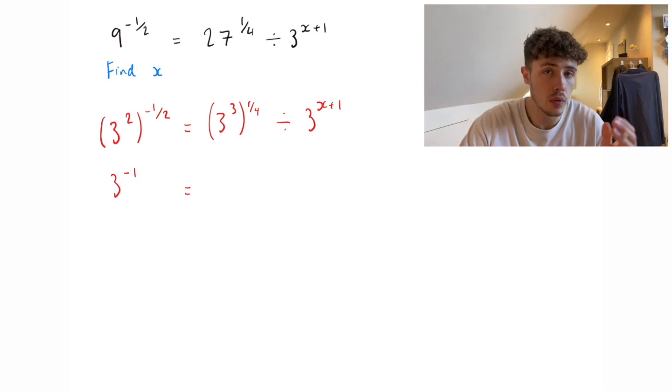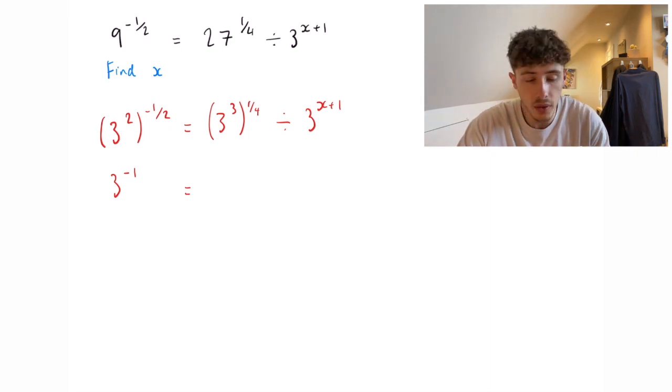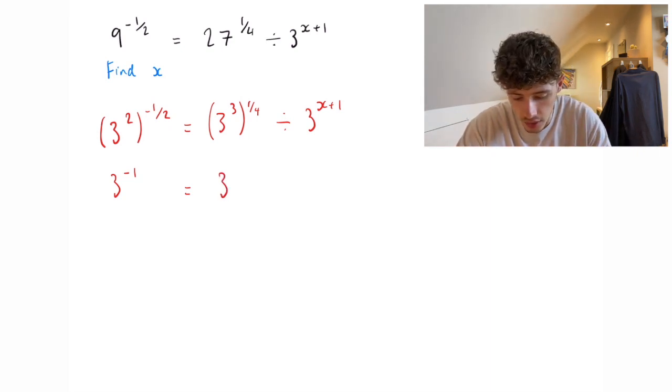3 to the 3 to the power of a quarter, we multiply the 3 and the quarter to make it 3 to the 3 quarters, and then we divide that by 3 to the x plus 1.